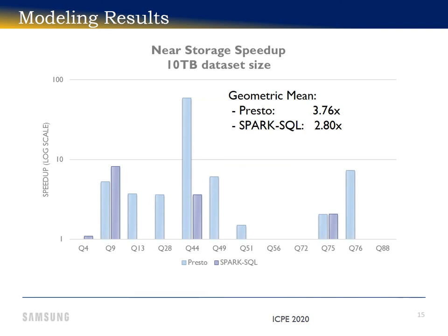These are our results. For some queries there's no speedup; some queries see really good speedups. The outlier is Presto query 44, which sees a 5.9 times speedup. The geometric mean is 3.7 for Presto and 2.8 for Spark SQL.